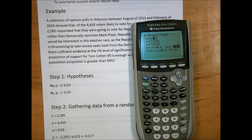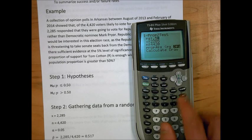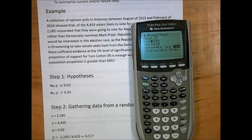Here we enter the null hypothesis proportion first. In this case, it's 0.5. Notice I've already entered the information from step 2. There were 2,285 people that said they would vote for Republican nominee Tom Cotton. There were 4,420 people that said they were going to vote for either of the top two candidates.